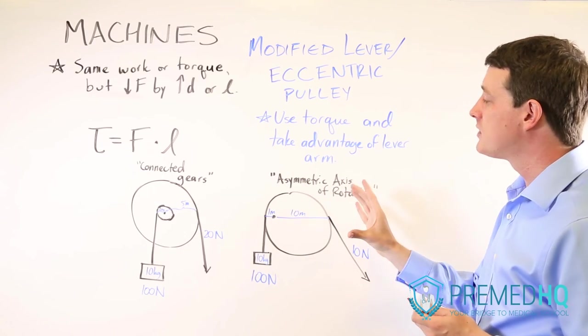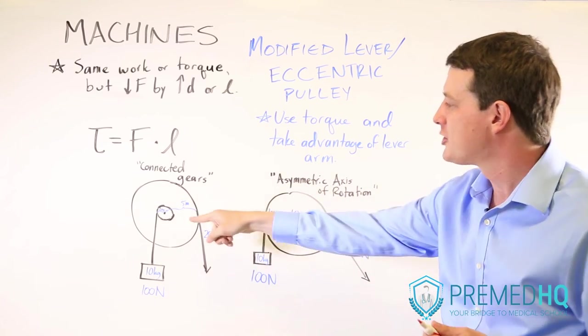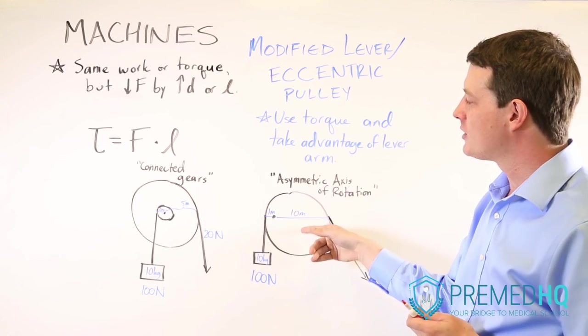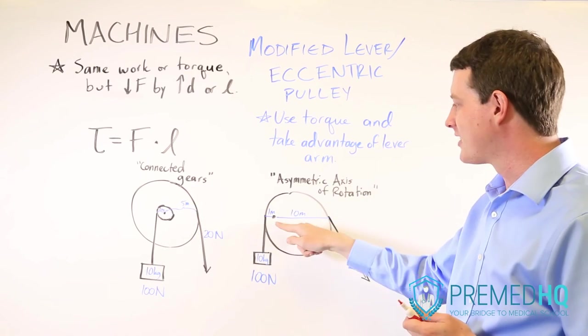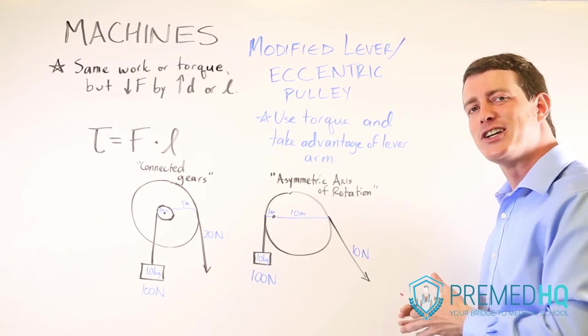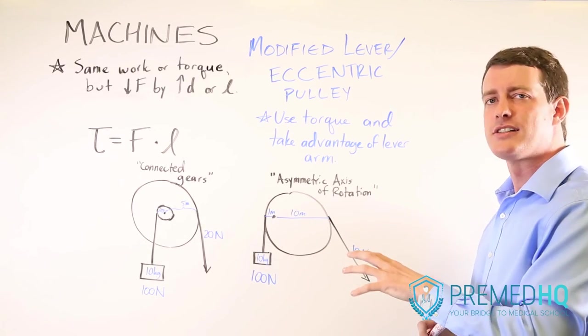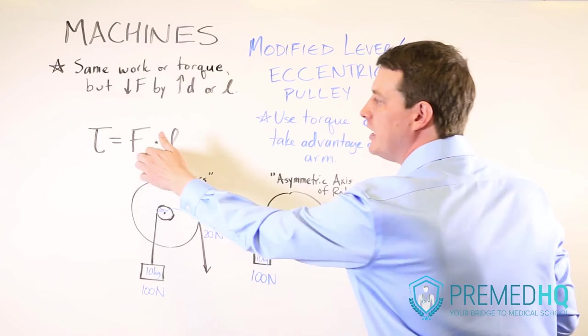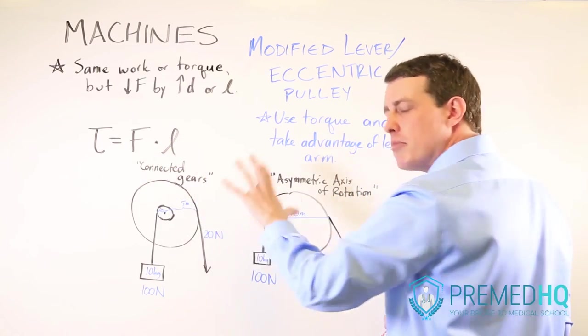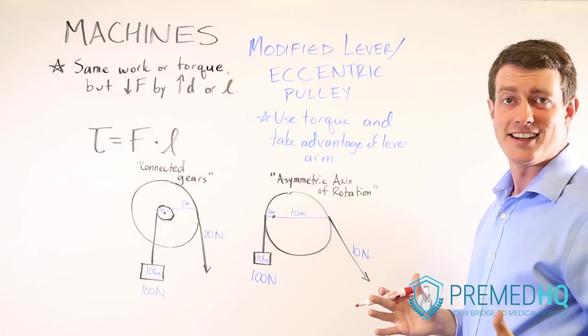And so whenever you see a pulley that's attached to another pulley like this, or if you see a pulley where they draw a dot showing the center of rotation not being in the center, then you simply analyze it using the torque equals force times lever principle that you use to analyze any lever.